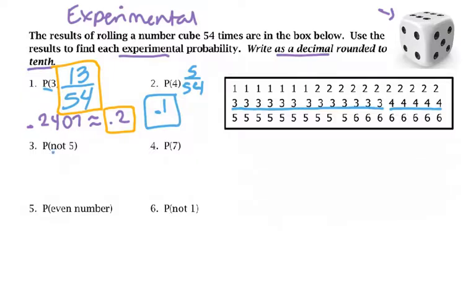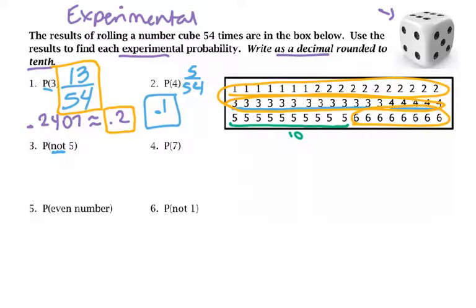For the probability of not getting a 5, that's everything except a 5 — all the 1s, 2s, 3s, 4s, and 6s. You could count all of those, or it might be easier to just count the 5s and subtract from 54. I count the 5s and there are 10. So the probability of not getting a 5 is 44 out of 54, because 44 outcomes were not 5s out of 54. The decimal is 0.81, which rounds to approximately 0.8 — about an 80% probability.